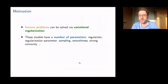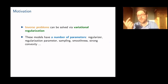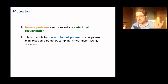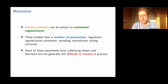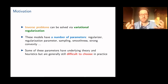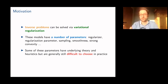To sum up this motivational section: image inverse problems can be solved via variational regularization, but these models have many parameters — the choice of regularizer, explicit regularization parameters, how to sample in MRI, smooth approximations, strong convexity terms. Some of these parameters have underlying theory, but even with theory they are difficult to choose in practice. Some have no real underlying theory at all. As a practitioner, it is quite difficult to choose among all these possibilities.